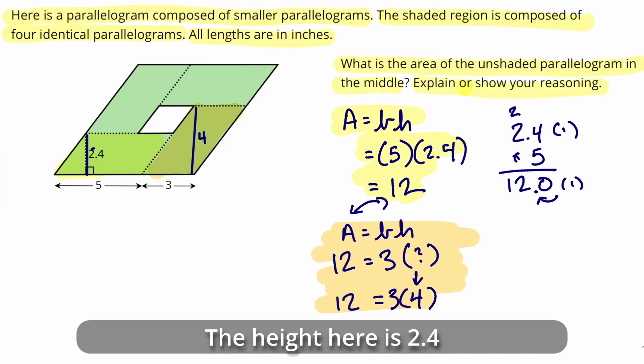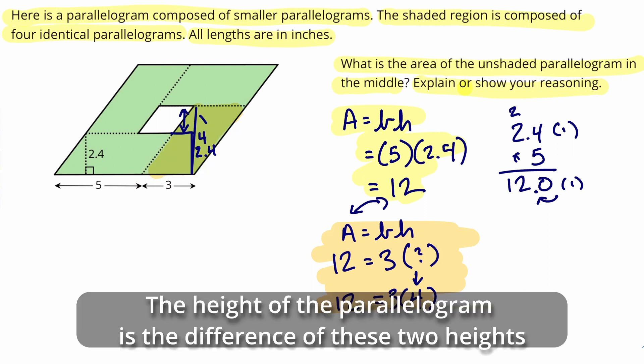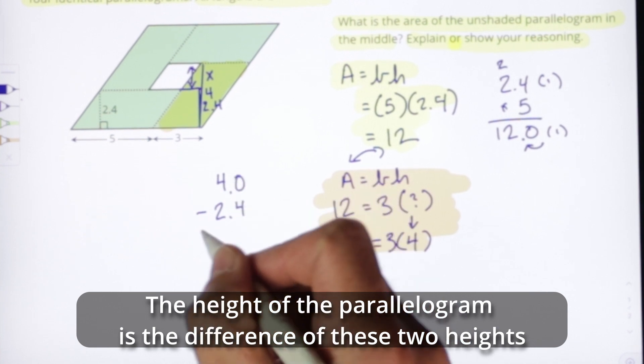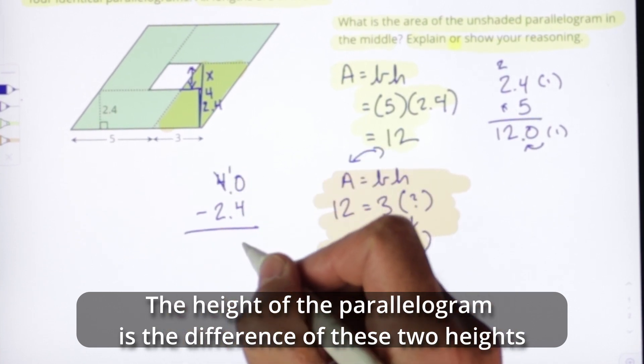If we know the height of this parallelogram is 2.4, we can take the difference of 4 and 2.4 and we can figure out that missing height of the unshaded parallelogram. It's just going to be the difference of those two heights.